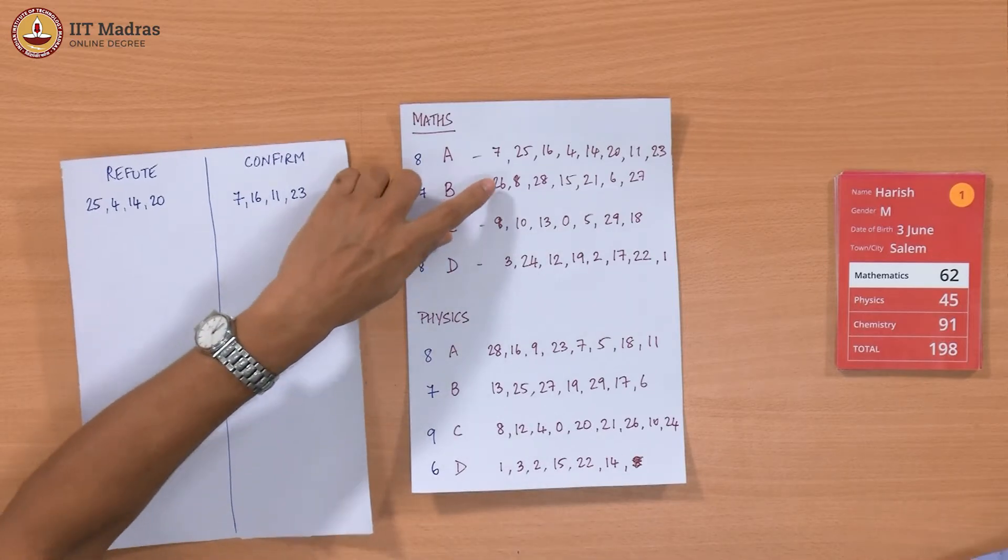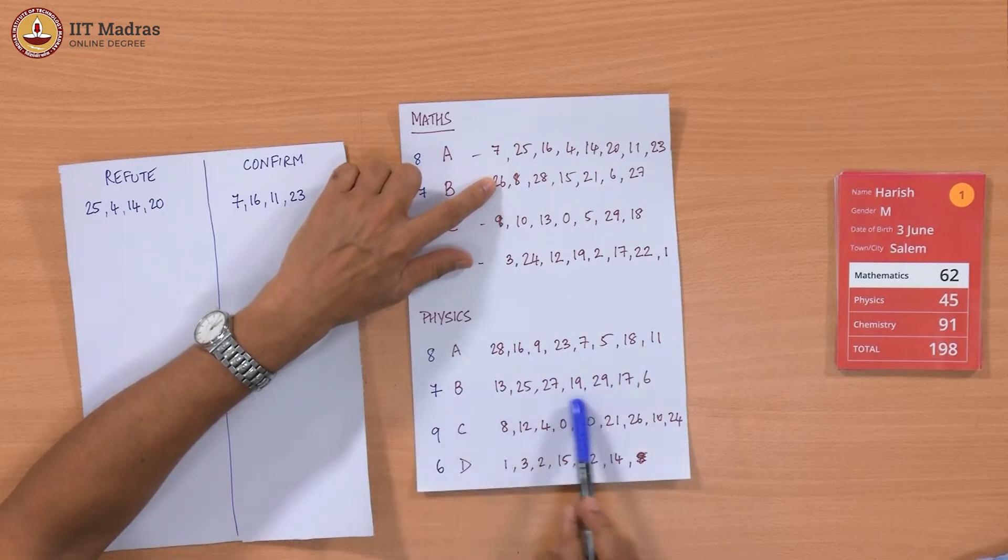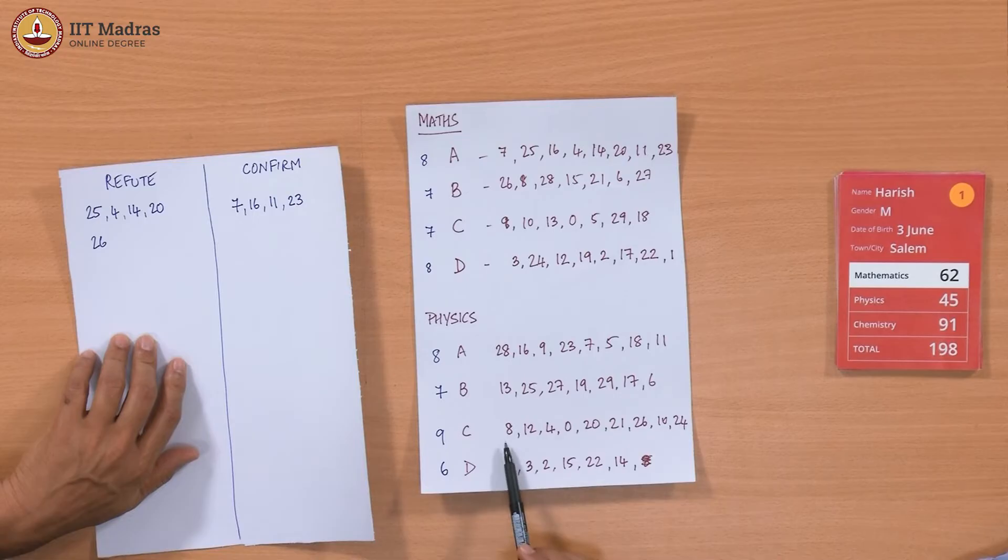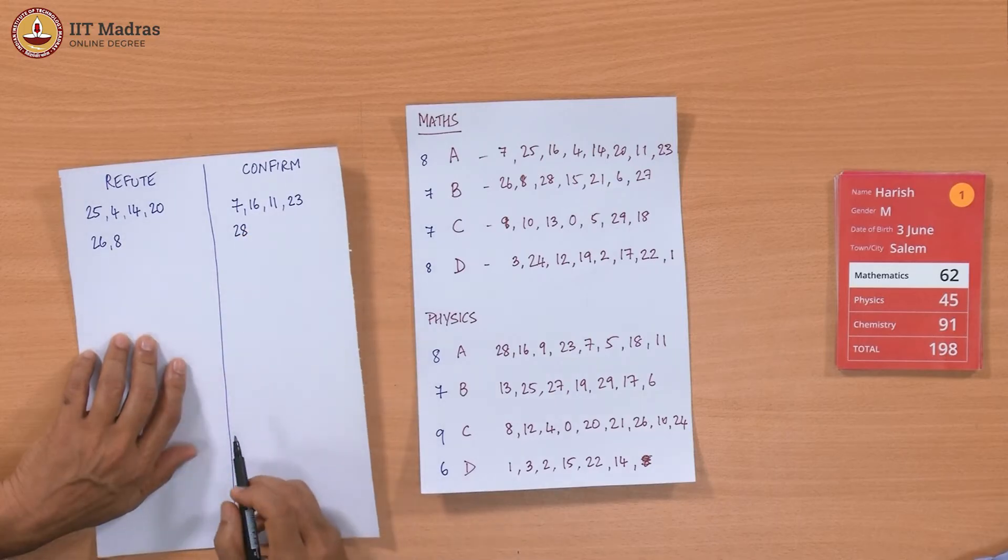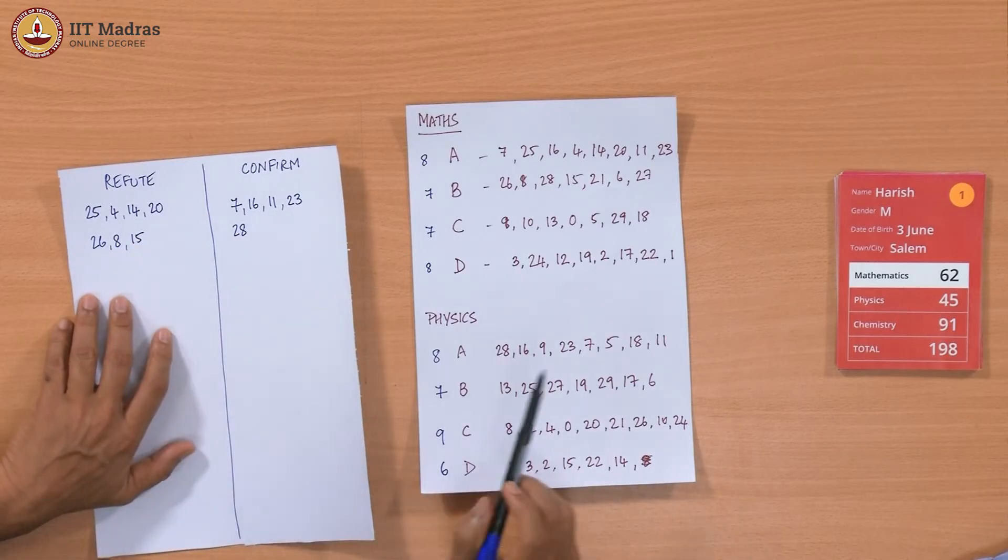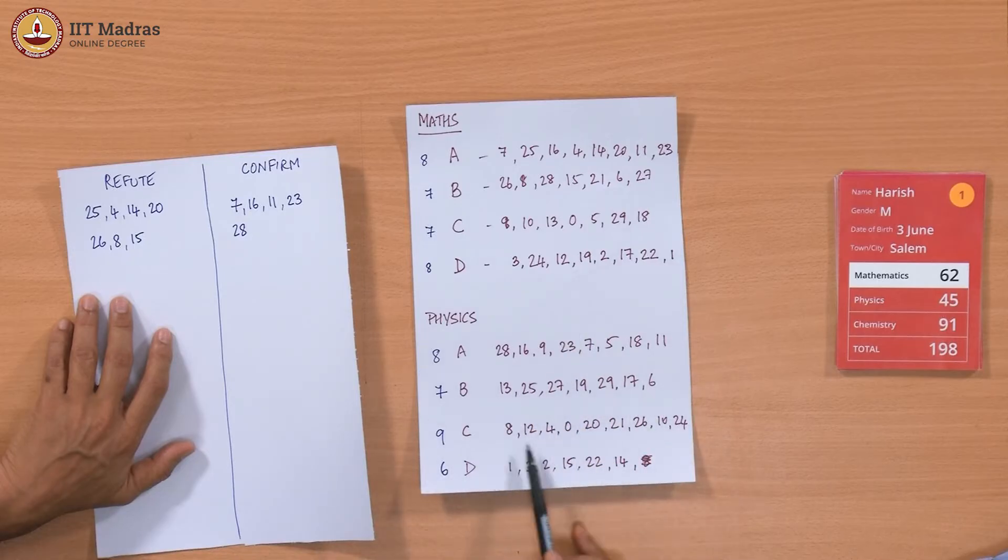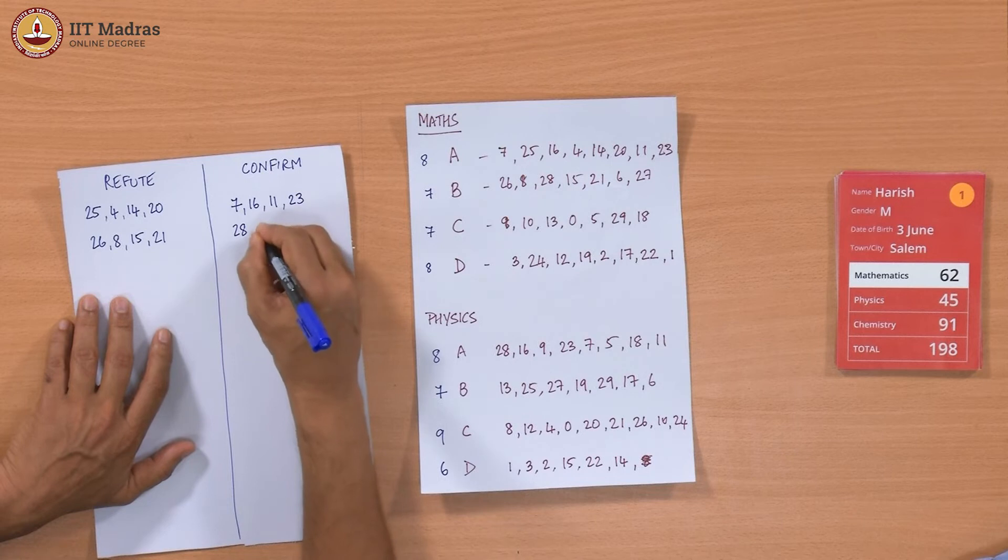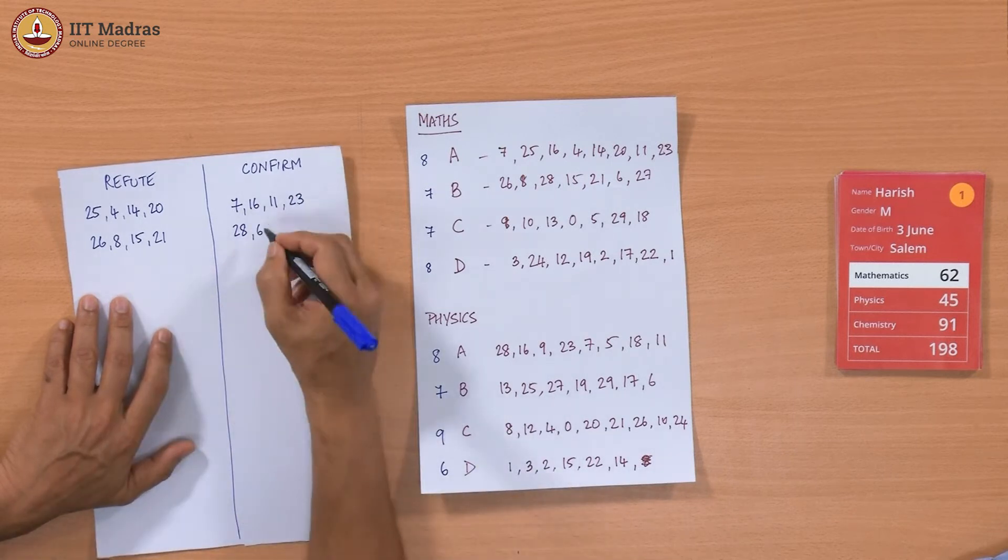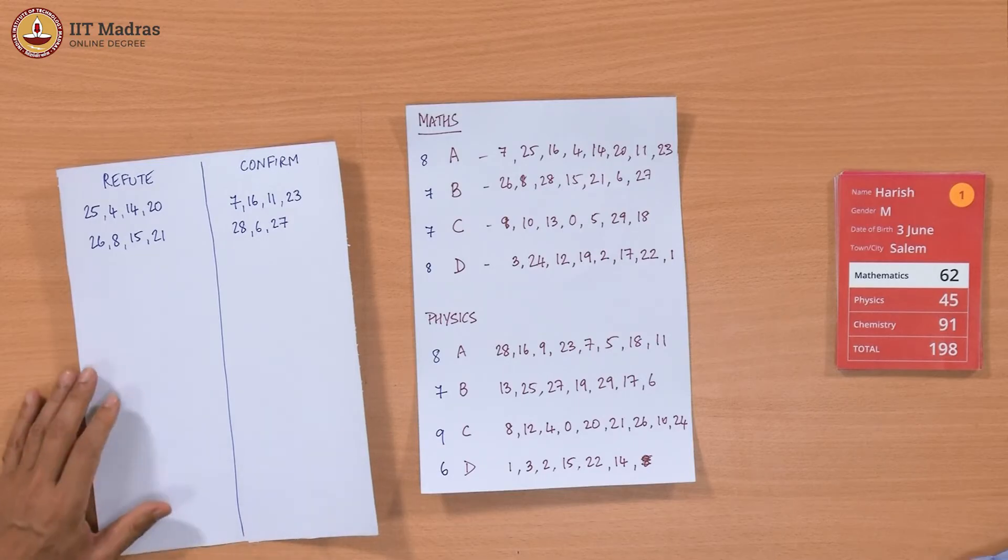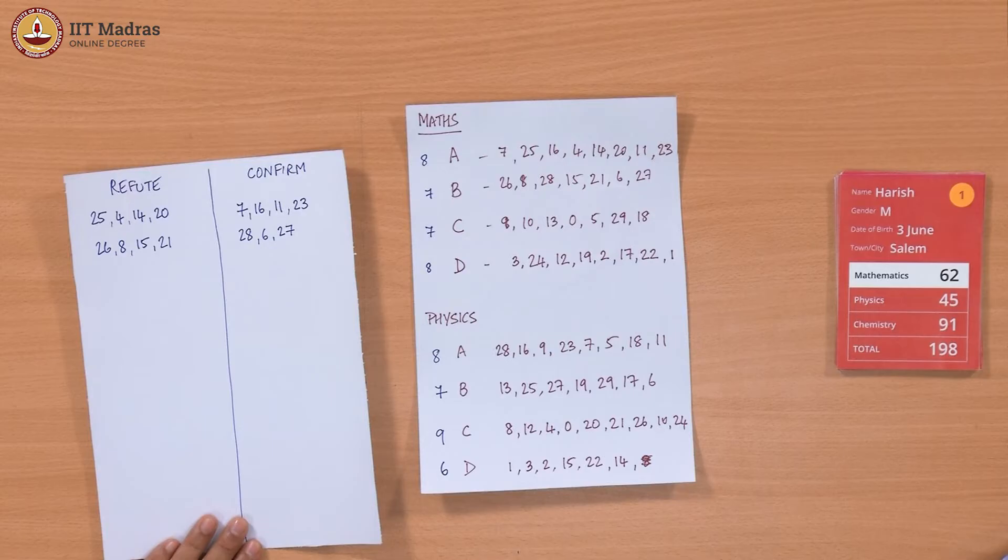So now we proceed to B. 26 should be in A or B, but it is in C, so 26 refutes. 8 is again in C, so refutes. 28 is here, okay. 15 is way down, refutes. 21 is lower, refutes. 6 is B, so it is okay, 6 confirms. 27 is also in the same grade, so 27 also confirms. So again we are kind of among 7 we are roughly equal, 4 and 3. So we are basically, it is not saying anything. We are not getting any information out of it. But okay, let us see. Let us go on.